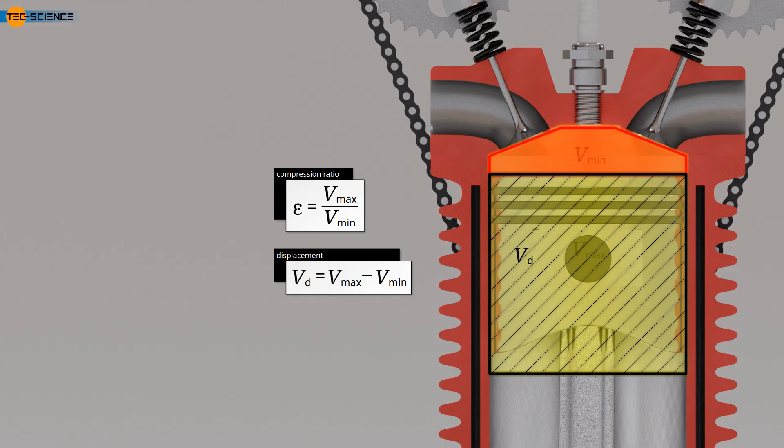For this reason, displacement is used in some countries, among other factors, to calculate vehicle taxes. In passenger car engines, individual cylinders typically have a displacement of 0.5 liters. If the engine consists of a total of 4 cylinders, each with 0.5 liters of displacement, the engine is referred to as a 2-liter engine.